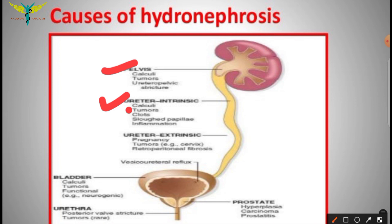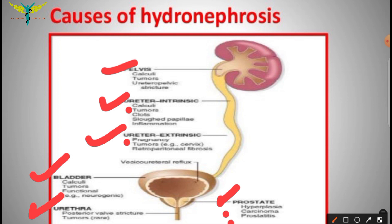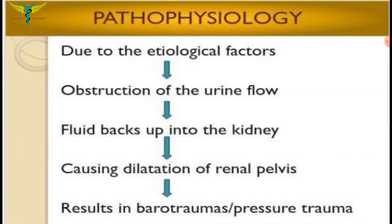Extrinsic causes of ureteral obstruction include pregnancy, tumors, and retroperitoneal fibrosis. In the bladder, calculi, tumors, and functional damage may lead to hydronephrosis. In the urethra, posterior valves, strictures, and tumors also cause hydronephrosis. Regarding the prostate, hyperplasia, carcinoma, and inflammation of the prostate gland are also causes.